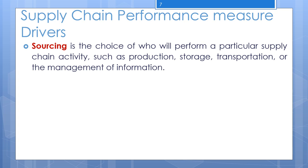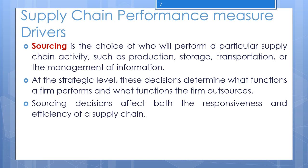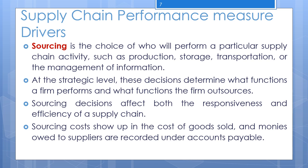Looking at the components of sourcing decisions: the most significant sourcing decision for a firm is whether to perform a task in-house or outsource it to a third party. This decision should be driven in part by its impact on total supply chain profit. It is best to outsource if the growth in total supply chain profit is significant with little additional risk. Within a task such as transportation, managers must decide whether to outsource all of it, only the responsive component, or only the efficient component.